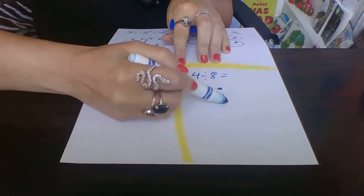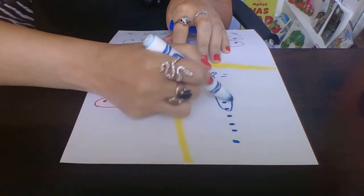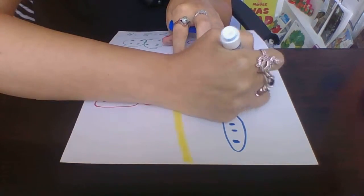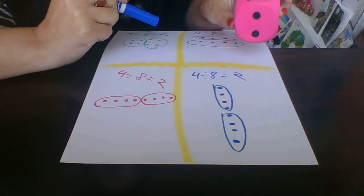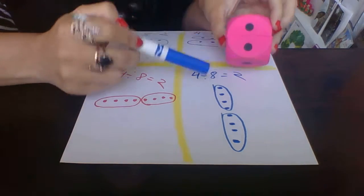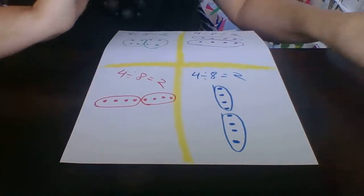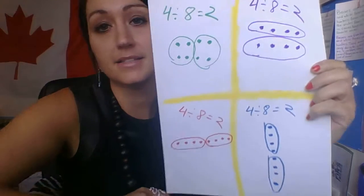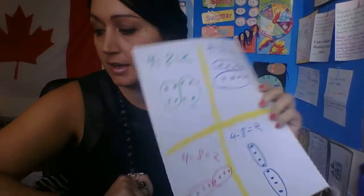One more example for you. Four divided by eight equals one, two, three, four, five, six, seven, eight. Four and four, two groups. This time the dots are like this. My brain knew two, I didn't have to count one, two - two, four, two, four. And I circled it.